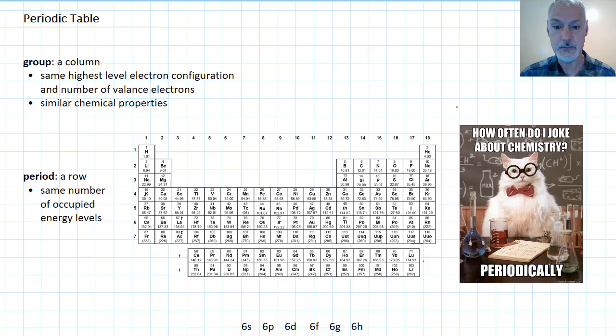Now, I could describe an element in terms of its period and its row. For instance, let's take the element tin, SN, right here. I could describe it as being in group 14 and period number 5.